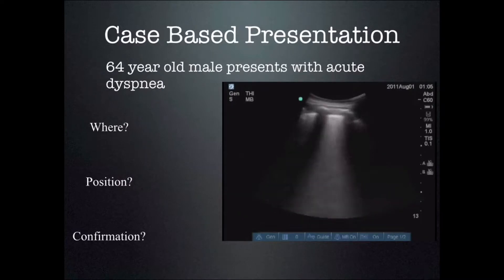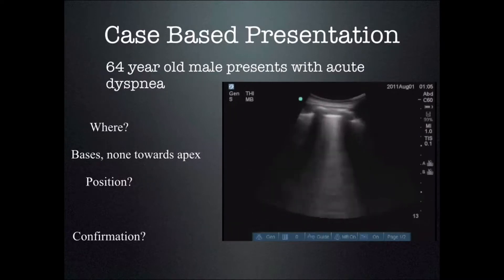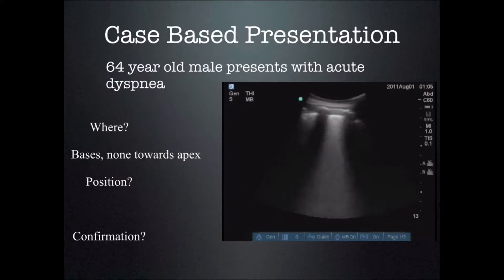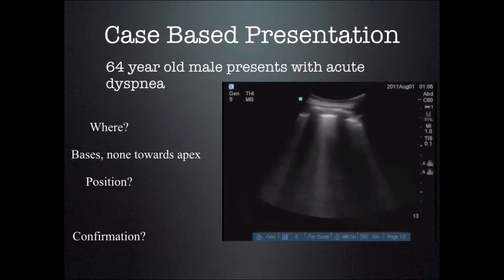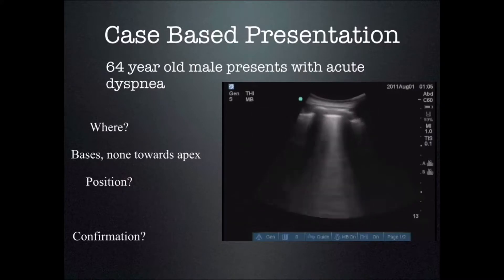The probe is at the base and you find lots of lung rockets on both sides, and as you move up the back the lung rockets become less and less numerous. Near the base we see so many lung rockets in each intercostal space we can't even count them. As we move up it becomes three, then two, then one, then none towards the apex. That means there is more fluid towards the base, because the number of lung rockets is proportional to the amount of fluid in the interstitial septa or alveoli.